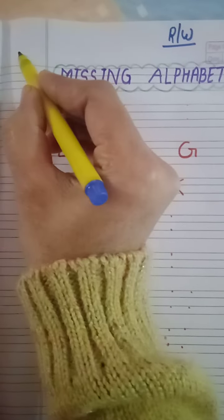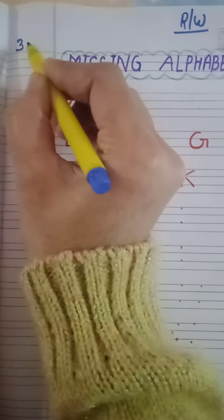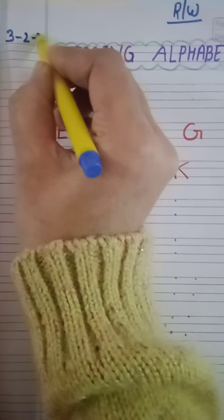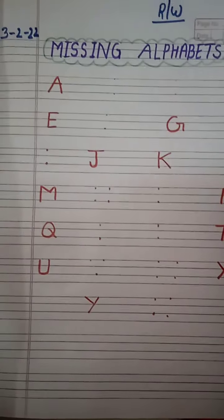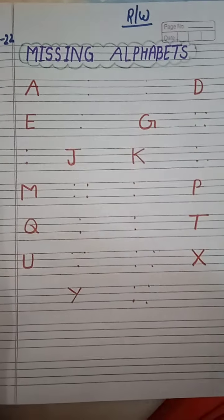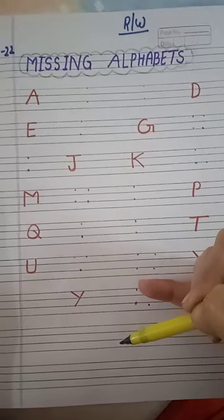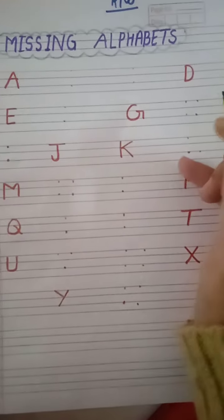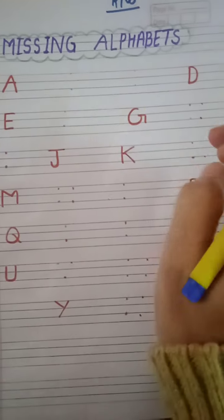First we write here date 3-2-22. Missing alphabet A to Z. We write A to Z but some letters are missing. We have to find the missing letters.